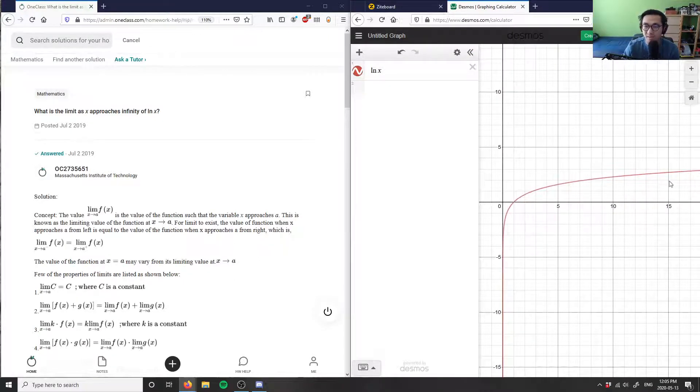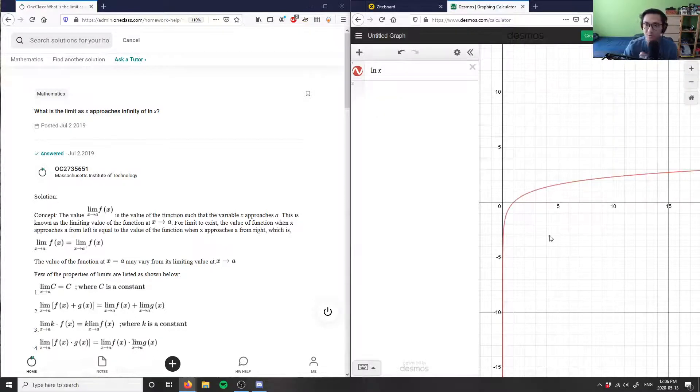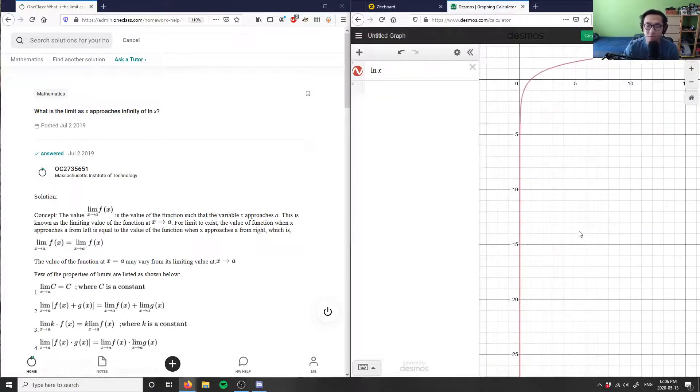If I were to go towards negative infinity, ln can't be zero here, so there's a little asymptote that goes all the way down here. Basically, we know that the natural logarithm can never be a negative number.